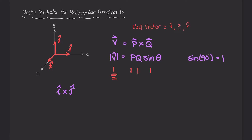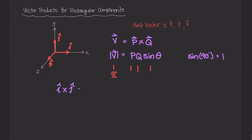When you take the cross product of any two unit vectors, the magnitude of that cross product vector is going to be 1. We also need to figure out which direction the resultant unit vector is facing. For i cross j, it lies along the z-axis — using the right-hand rule, you lay your four fingers along i, curl them towards j, and your thumb points out of the page, giving us positive k.